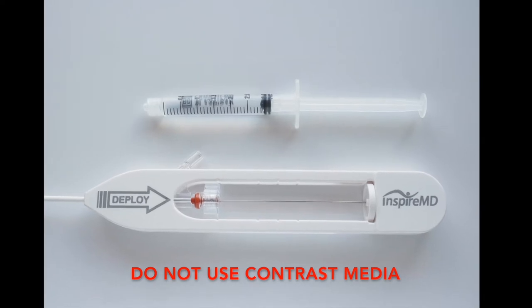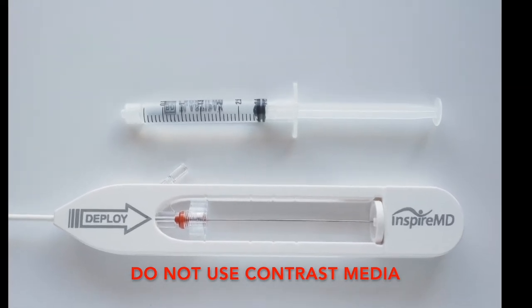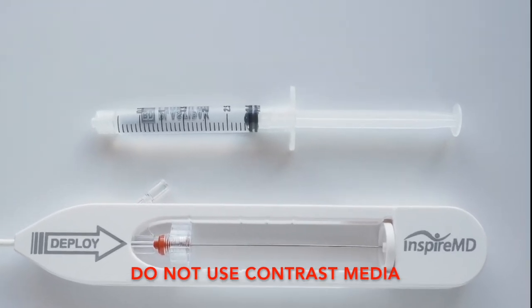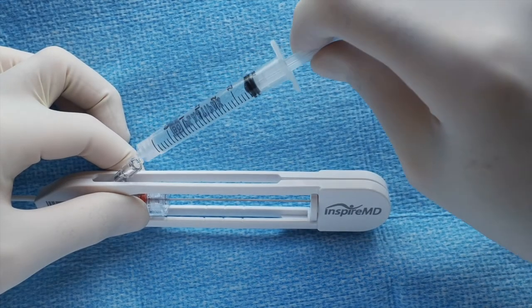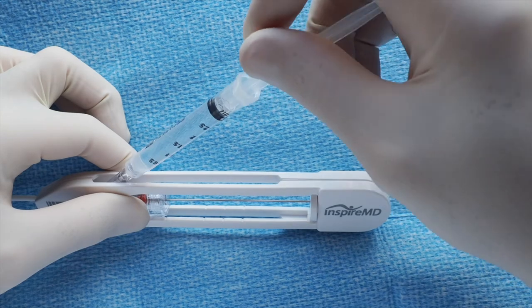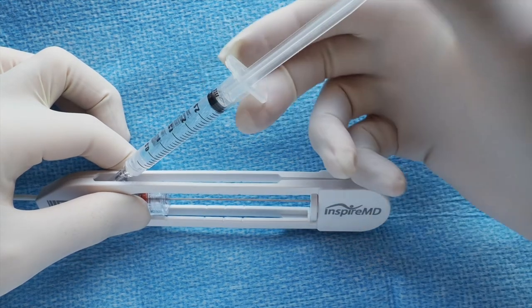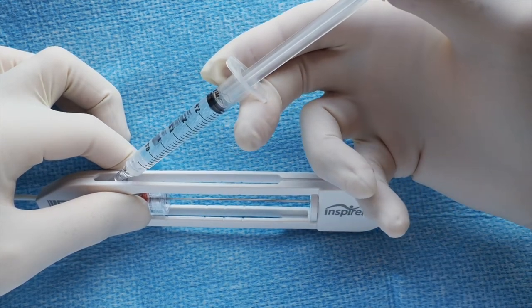For device flushing, use a 3 cubic centimeter luer lock syringe filled with heparinized saline solution. Carefully flush the system. Hold the Y-valve body, connect the syringe and hold the syringe properly for flushing.